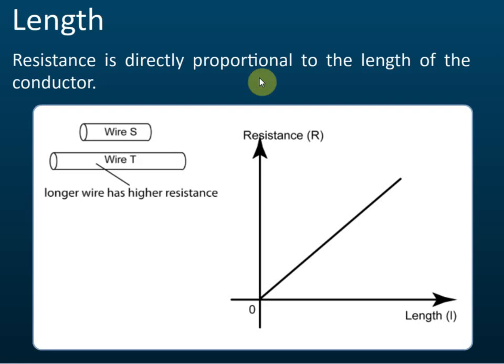The first factor that affects the resistance of a conductor is length. Resistance is directly proportional to the length of the conductor. So if we have two wires made up of the same material, the longer wire will have a higher resistance — the longer the wire, the higher the resistance. This graph also shows that resistance is directly proportional to length, because it is a straight line passing through the origin.